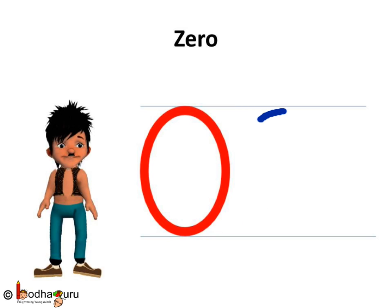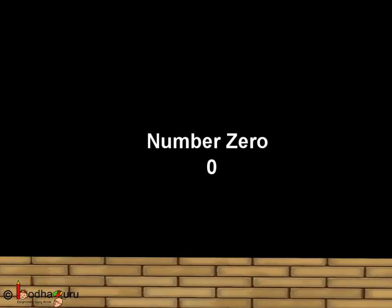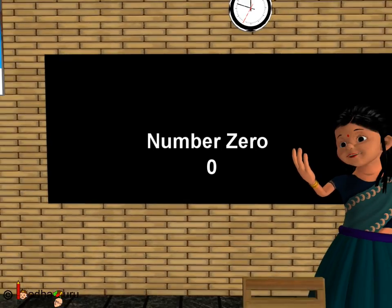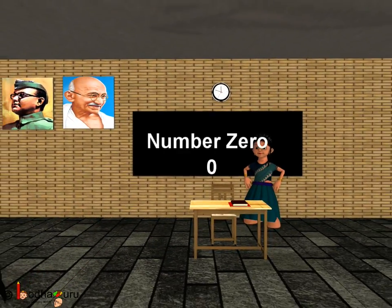So, zero is a curve starting from up — a curve facing forward — then a curve facing backwards. Look, the number zero is ready. Bye-bye, kids.